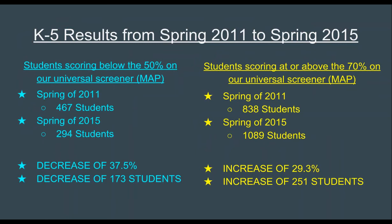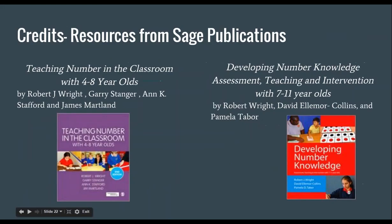To conclude, we'd like to share some of our district data. Kindergarten through fifth grade, from our universal screener — MAP testing from 2011 until last year, spring 2015 — we've seen a decrease of 37.5% of students who are below the 50th percentile, and an increase in students at the 70th percentile or above of 29.3%. We've found really great results with all of the work we've been doing in our math instruction. Here are the two resources we utilize in our intervention instruction: Teaching Number in the Classroom and Developing Number Knowledge.